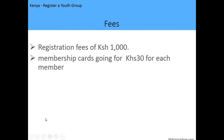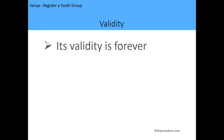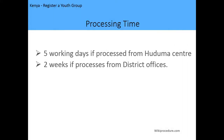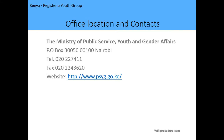The registration fee is one thousand shillings, and membership cards cost 30 shillings each — every member is supposed to be issued with a membership card. The validity period is forever. The processing time is five working days if processed from a Huduma Center, and if processed from the district offices it can take up to two weeks.